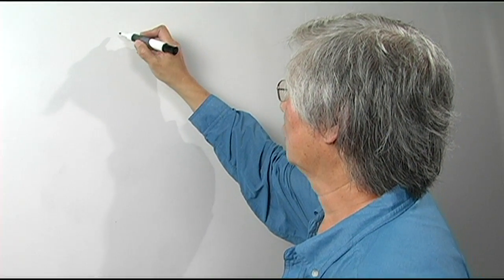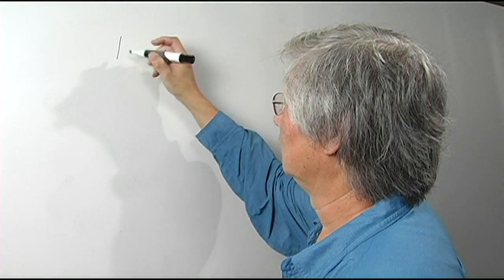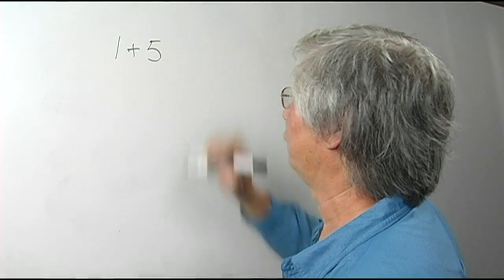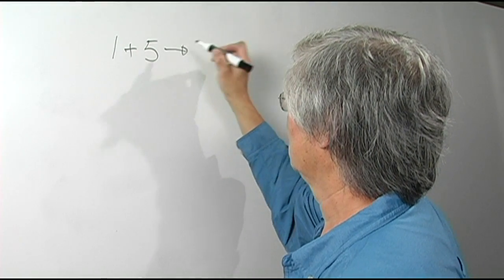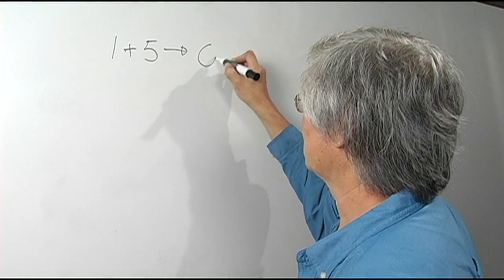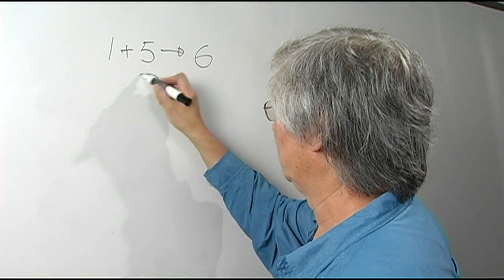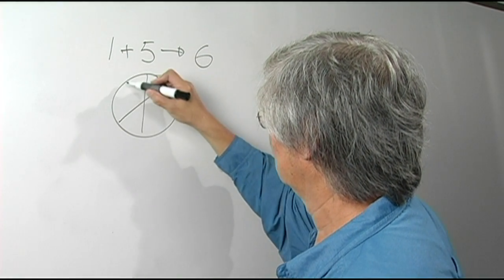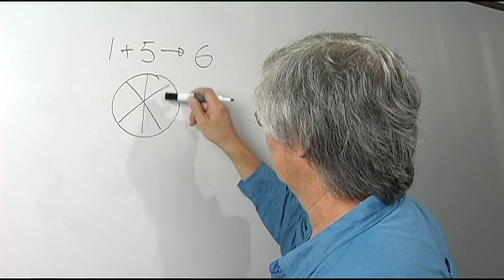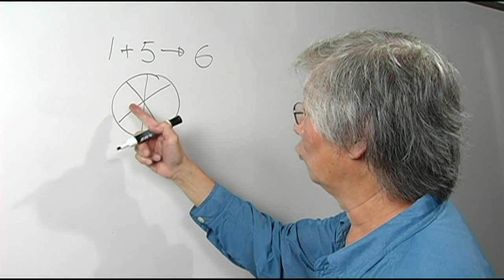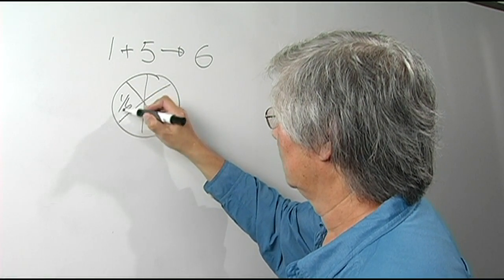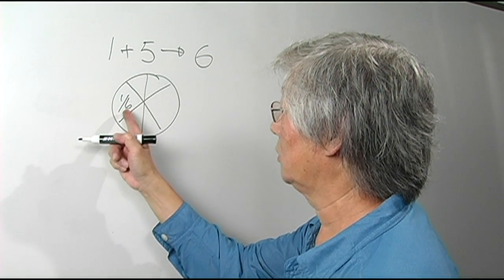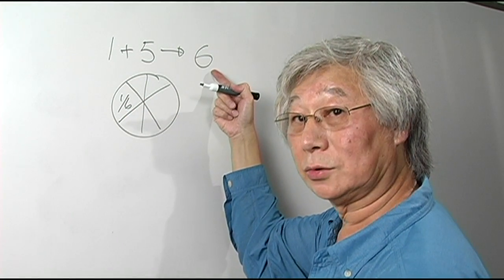I'm going to eat some pizza and share it with five friends. So that means I'm going to cut the pizza into six pieces — one, two, three, four, five, six. So each person will get one sixth of the pizza. Each piece of the pizza is the reciprocal of the number of people sharing the pizza.